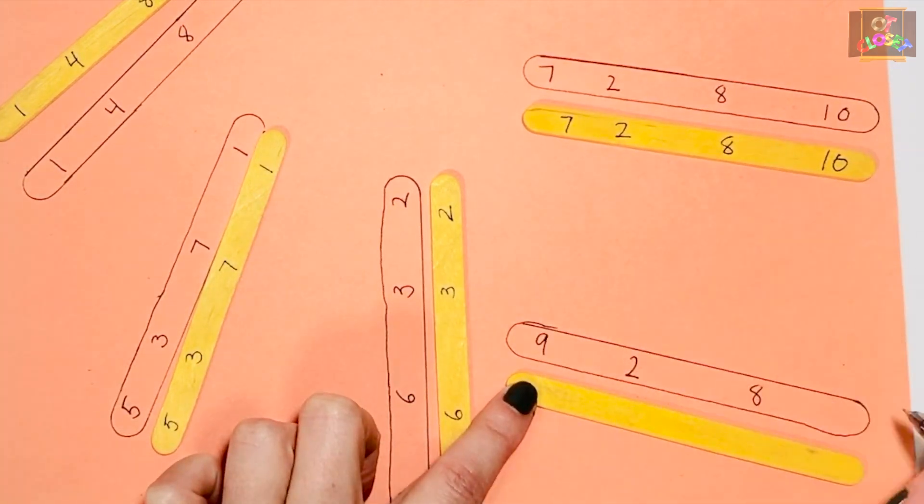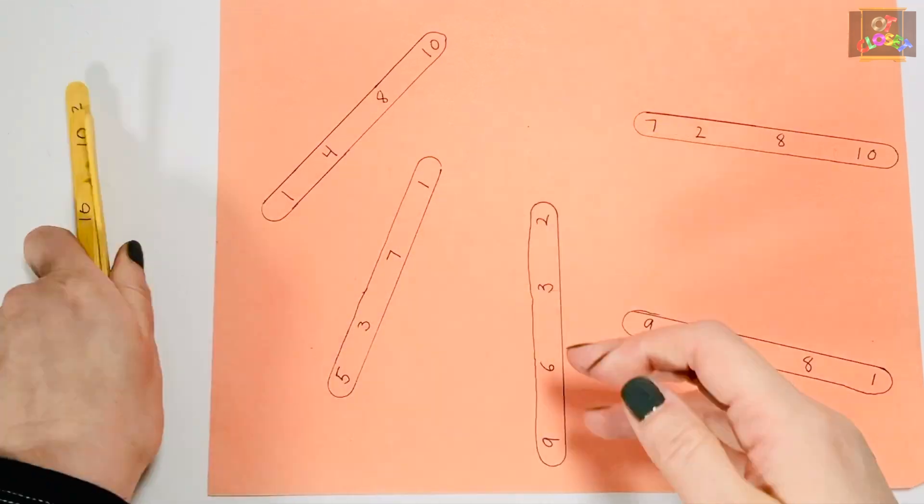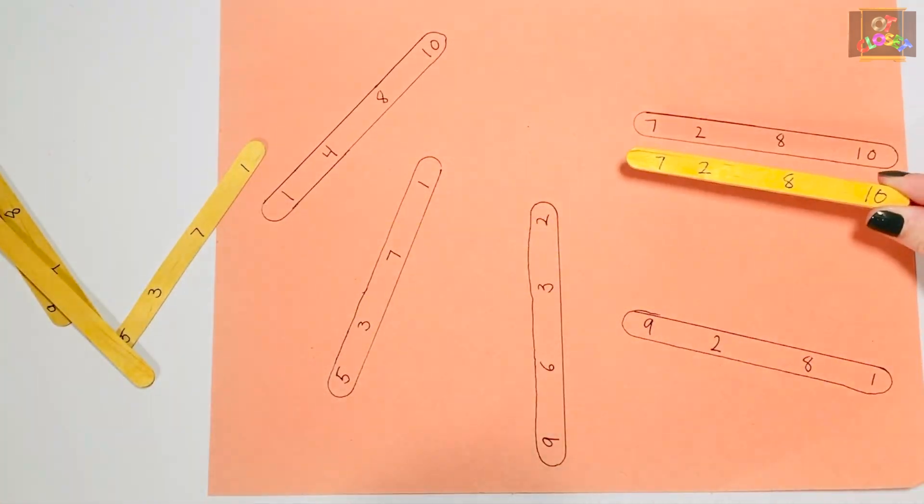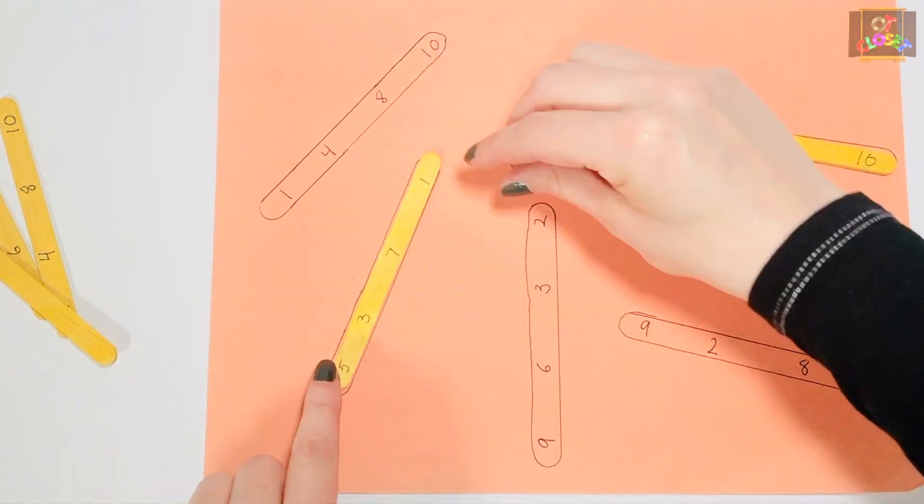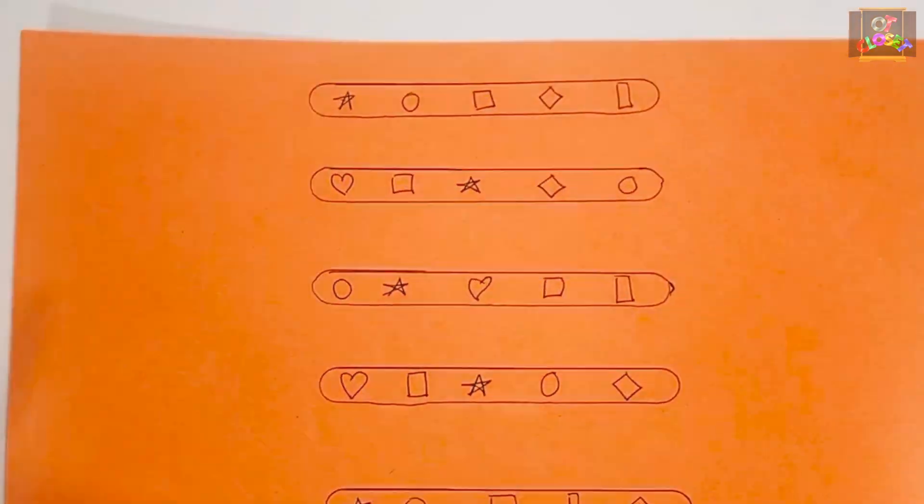Now ask the child to look at the numbers in order to match the ones on the paper to the stick. You can practice with shapes as well.